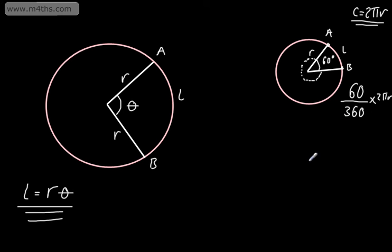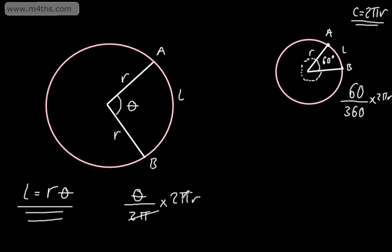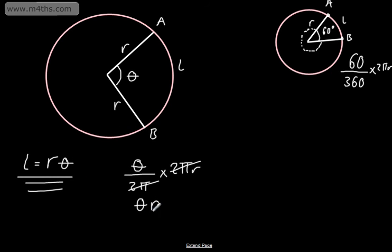Now thinking in radians, we established that 360 degrees equals 2π radians. So we can write this as theta over 2π, multiplied by the circumference 2πr. The 2π's cancel, giving us the arc length as simply theta multiplied by the radius. That's where the basic formula comes from: we take theta over 2π multiplied by 2πr, and that gives us L = Rθ.